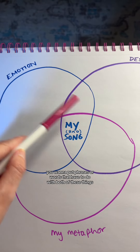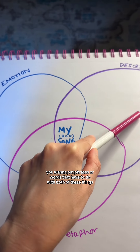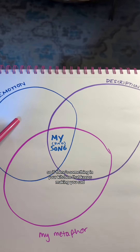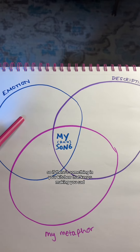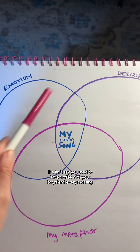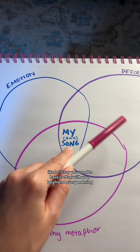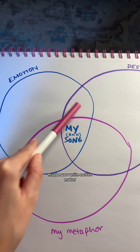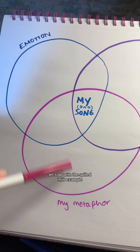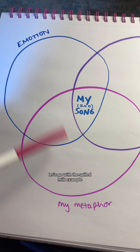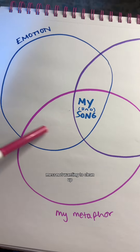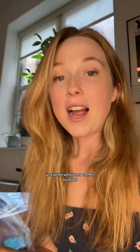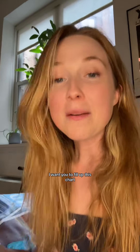In the overlapping areas, put phrases or words that relate to both circles. For example, if there's something in your kitchen that keeps making you sad — like if you used to have coffee with your boyfriend every morning and now you broke up — maybe you write 'coffee maker.' For the spilled milk example, you might write 'mess' or 'not wanting to clean up.' Just write whatever comes to mind.